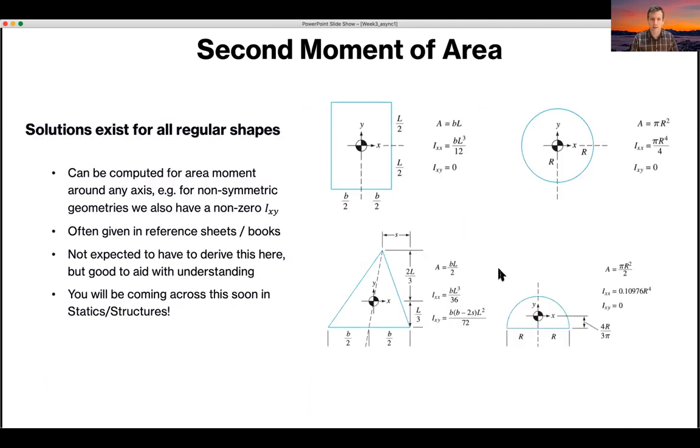And again, this is a quantity which can be computed around any axis, and for any shape. And you can see that in some of these examples taken from the textbook, you have some values of Ixy are zero, and in some cases, in all other cases, it's zero. And this is only non-zero if the shape is not symmetric around the y axis.